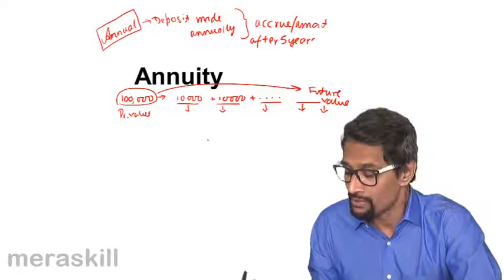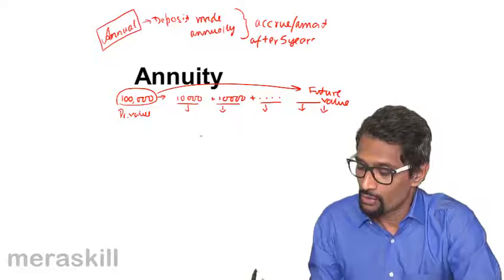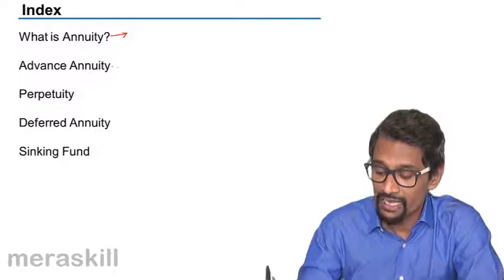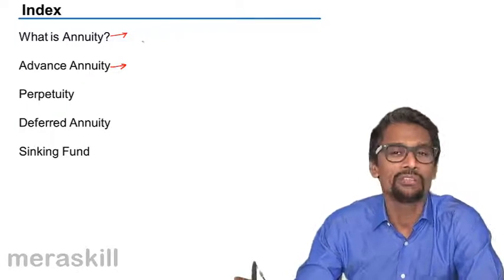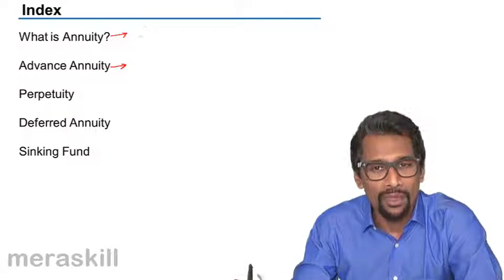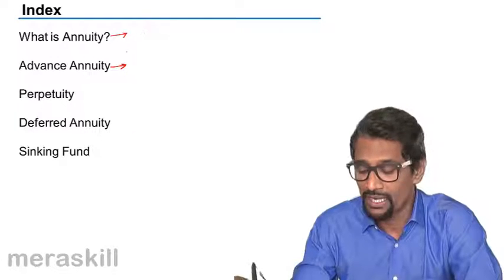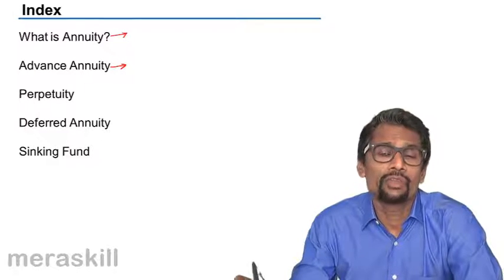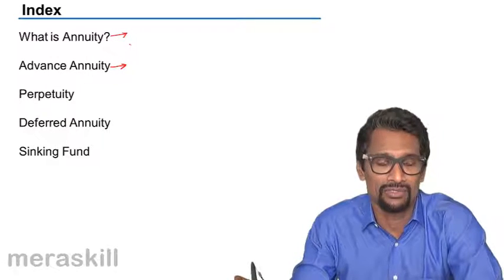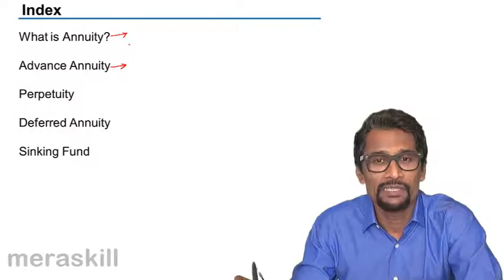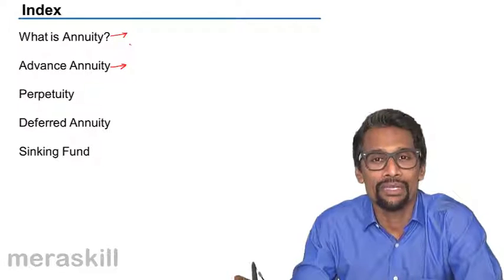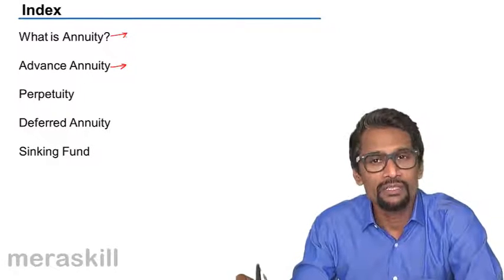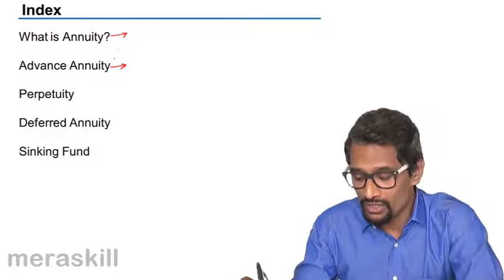Now, we shall take this up more in detail. We're going to cover what is annuity, then we have the concept of advanced annuity. What we generally do is called annuity due, which means you pay the installment at the end of one year. But sometimes you may pay the first installment at the beginning — suppose you are planning to take a loan of 1,00,000 and you pay the first installment on the day the loan is sanctioned. That one will not accrue any interest. To study advanced annuity, we should first understand annuity due.